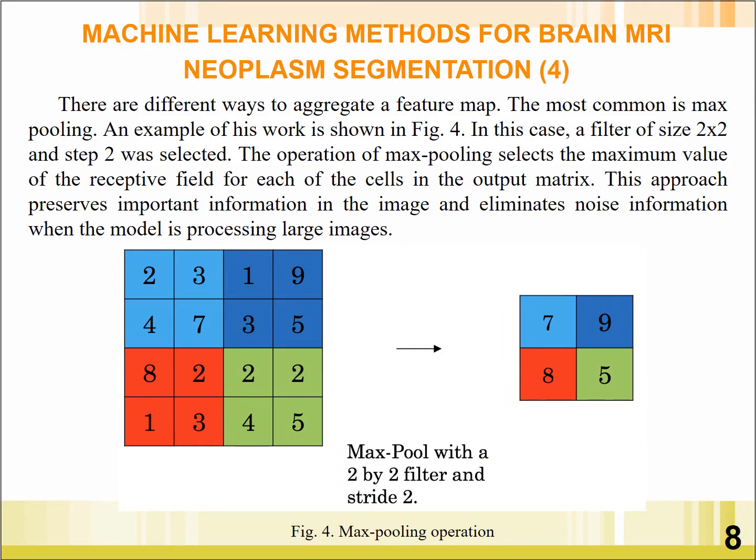There are different ways to aggregate a feature map. The most common is max pooling. An example of this is shown in Figure 4.